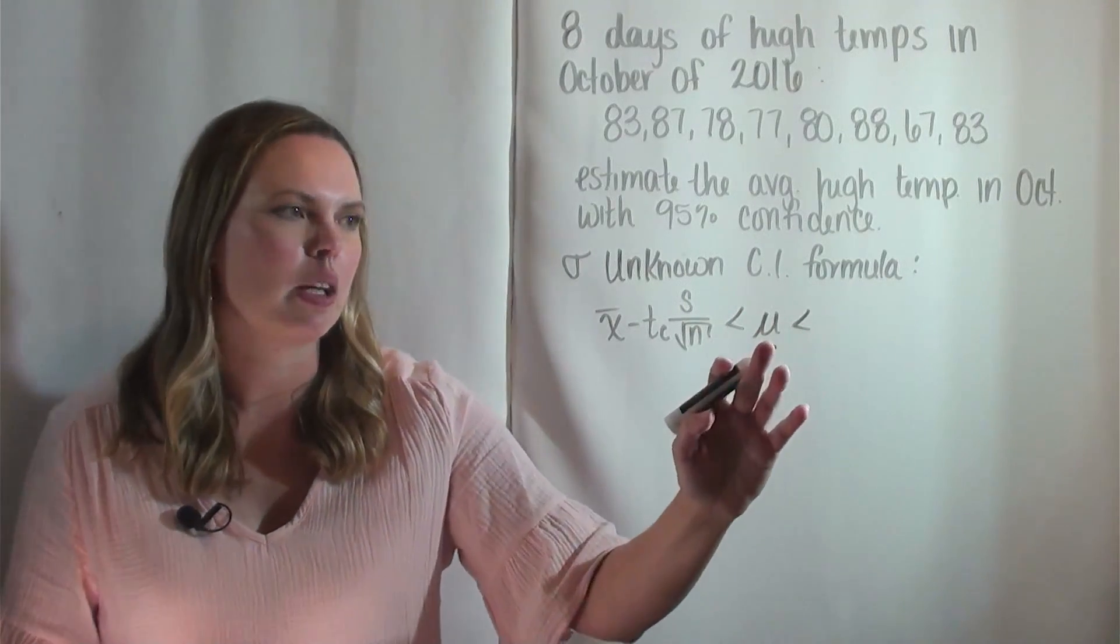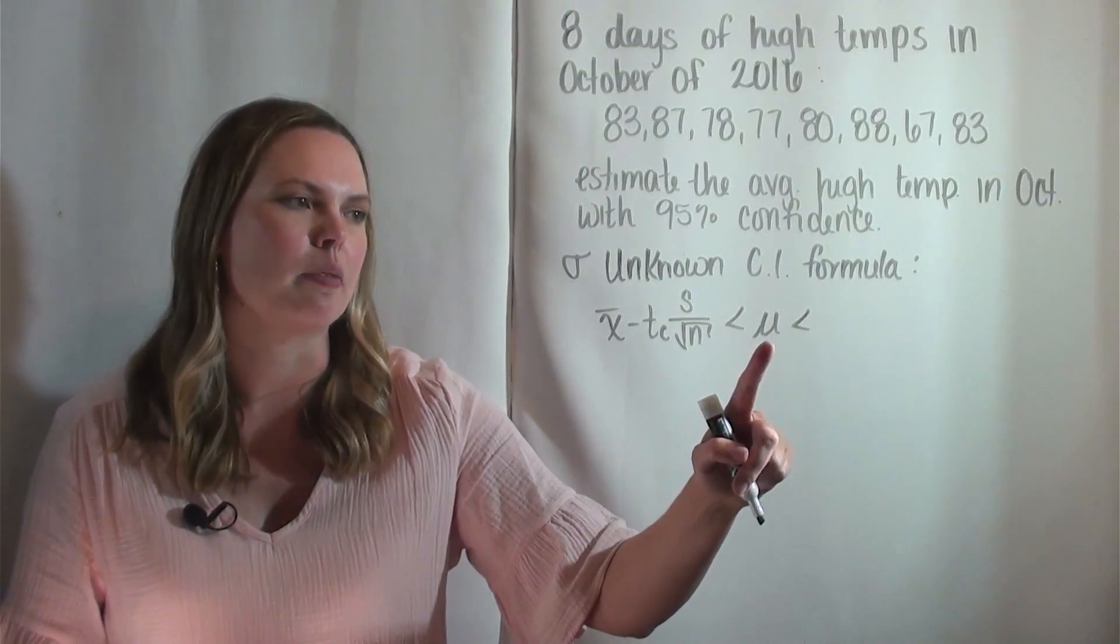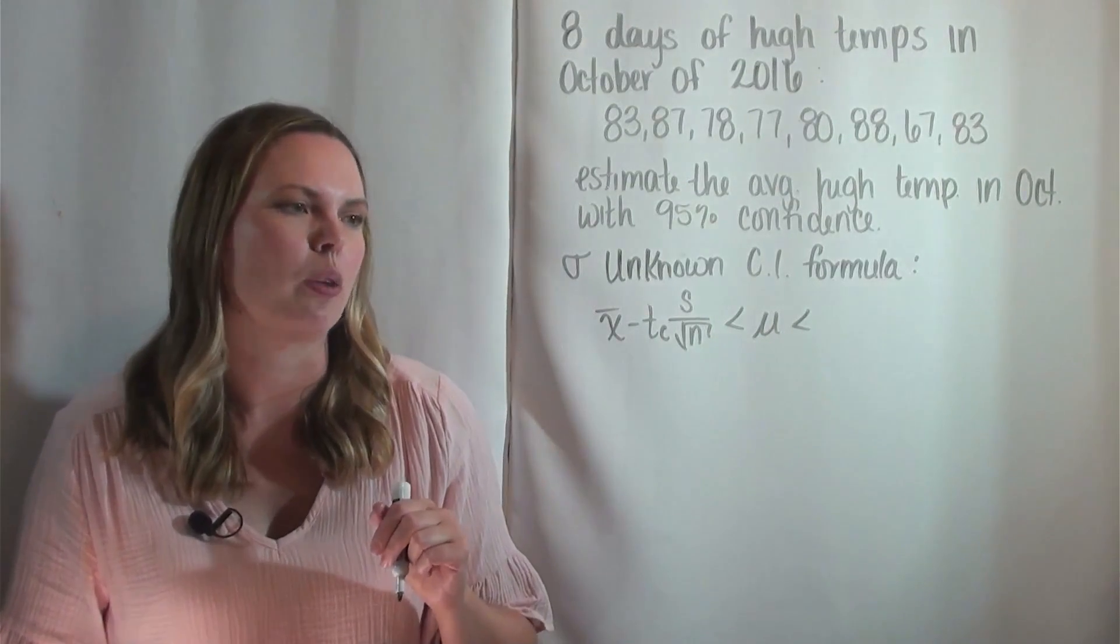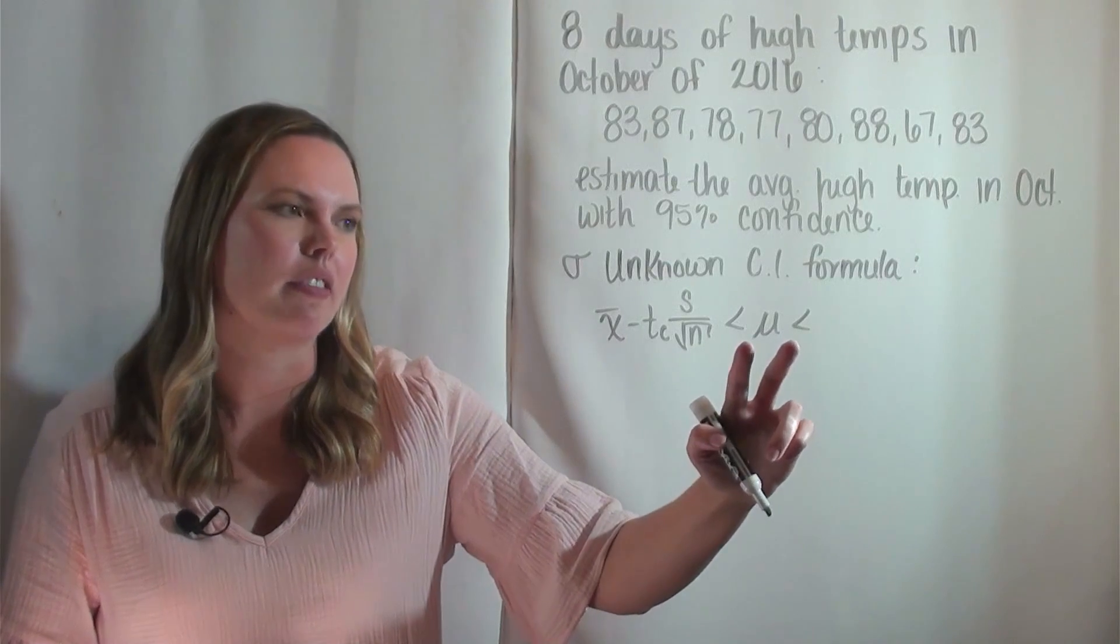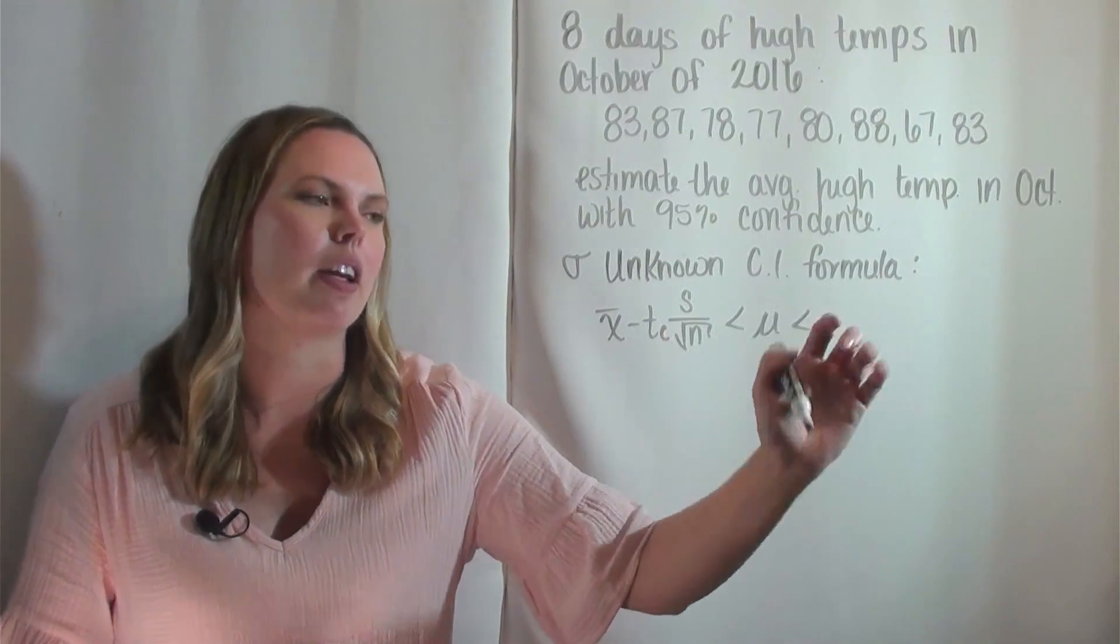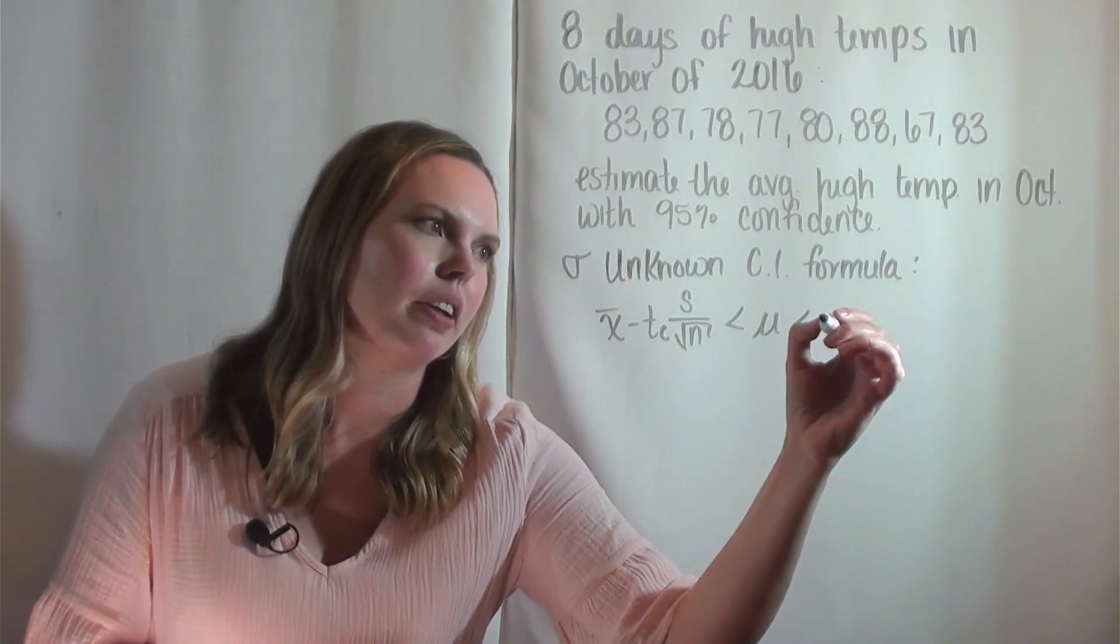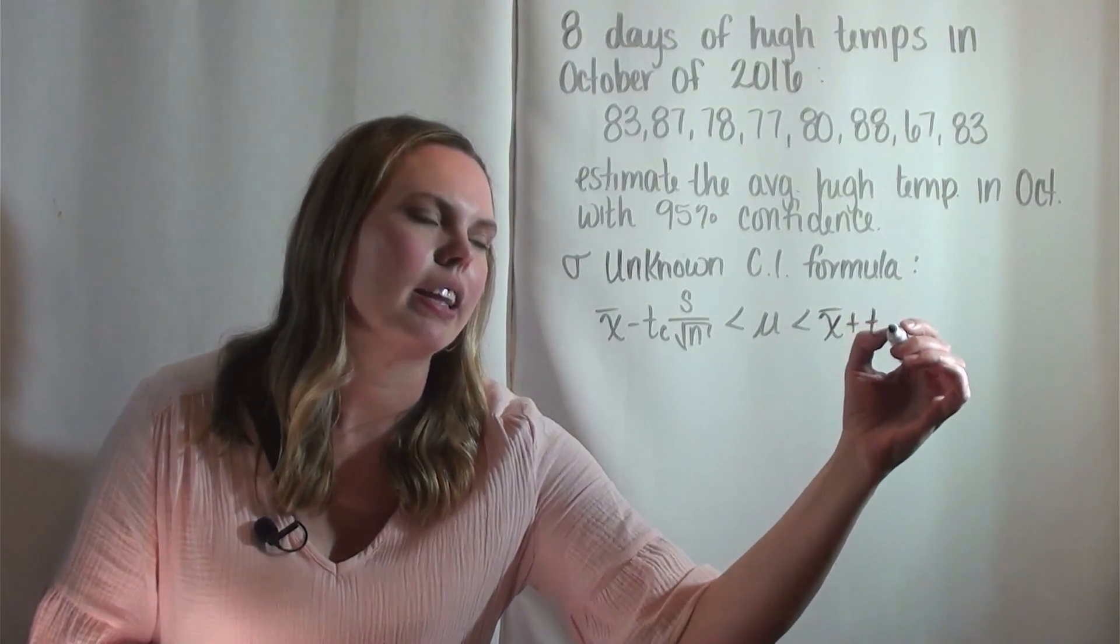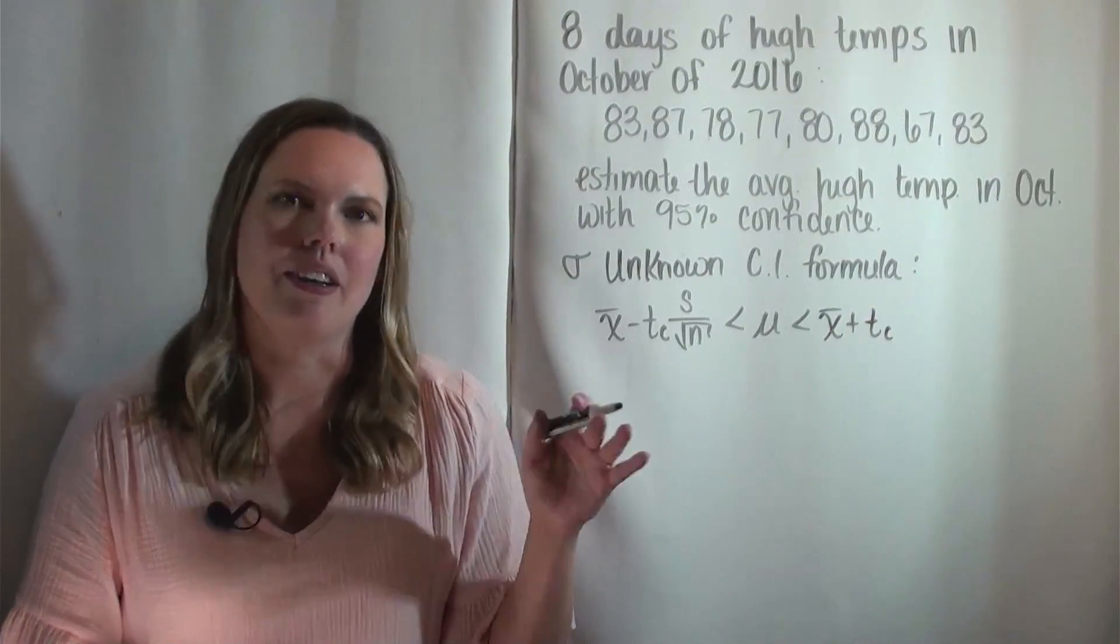We are estimating mu here, which is this Greek small mu. I have it here as the variable and I'm using these less than symbols to say it's bigger than this value and smaller than this value. You'll sometimes see the confidence interval written like this, or with a hyphen in between.